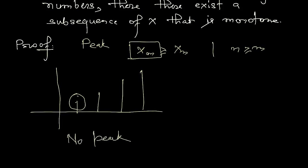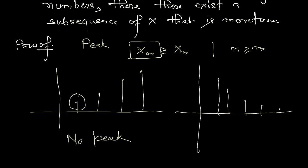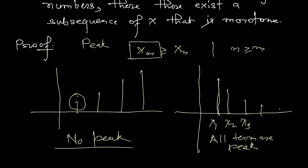On the other hand, in a decreasing sequence, all terms after any given term are smaller, so x1 is a peak. x2 is also a peak because all terms after x2 — x3, x4, x5, and so on — are smaller than x2. Similarly x3 is a peak. So in a decreasing sequence all terms are peaks, while in an increasing sequence no term is a peak. In general, sequences can have some peaks, infinitely many peaks, or peaks scattered throughout.